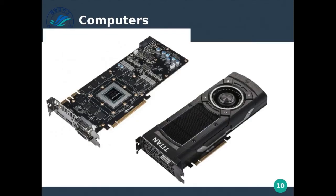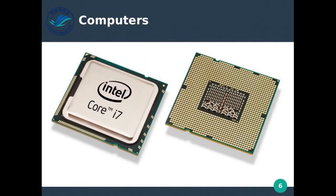Next is a video card. This is a newer type of video card and it's basically almost another computer inside your computer that focuses only on video. The processor in our computer is what we call a general processor — it's used for general processing. That means it can handle a bunch of different problems, but it's not really specialized for any of them.